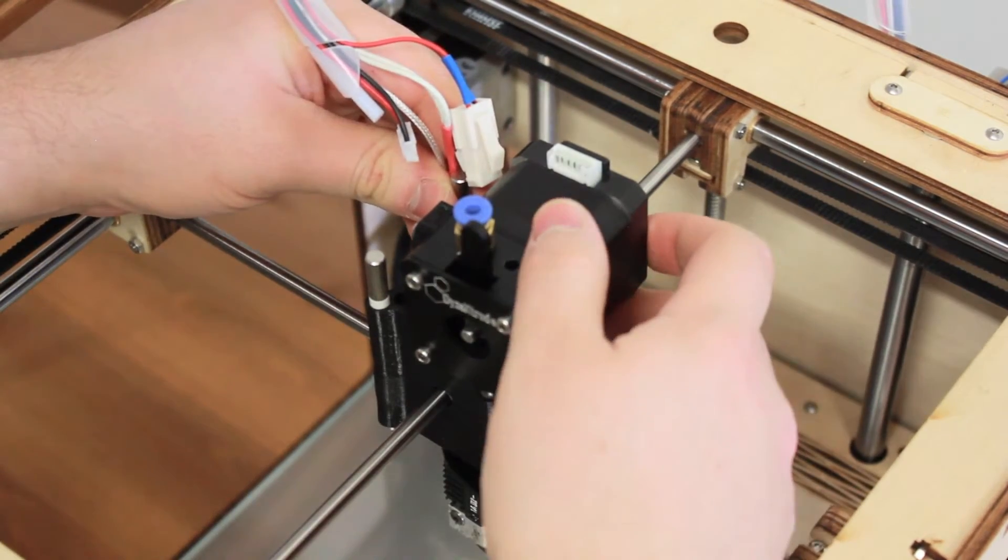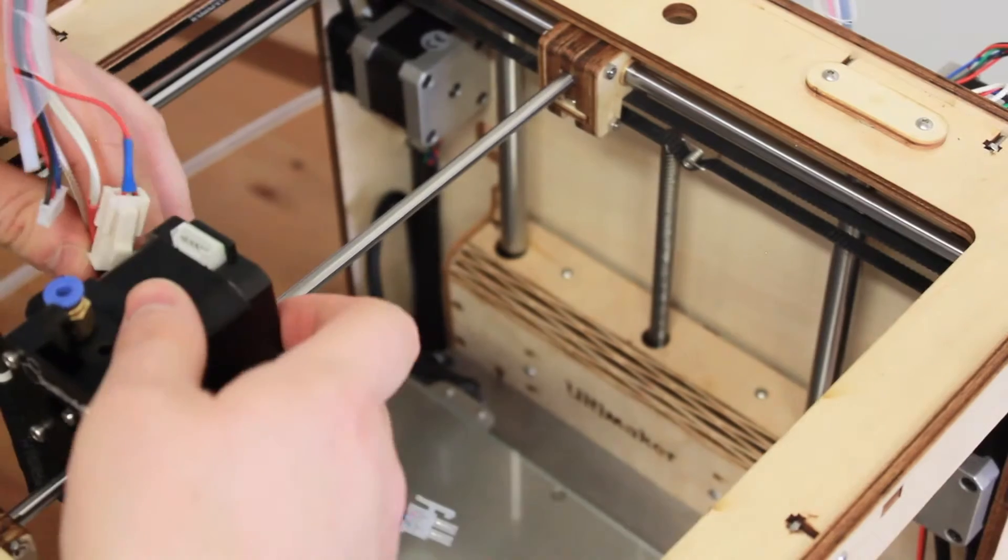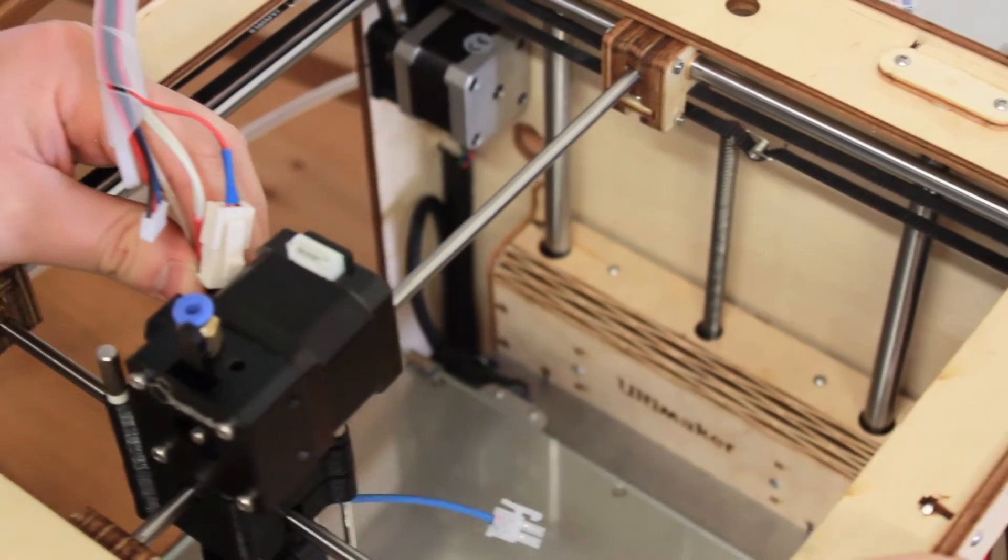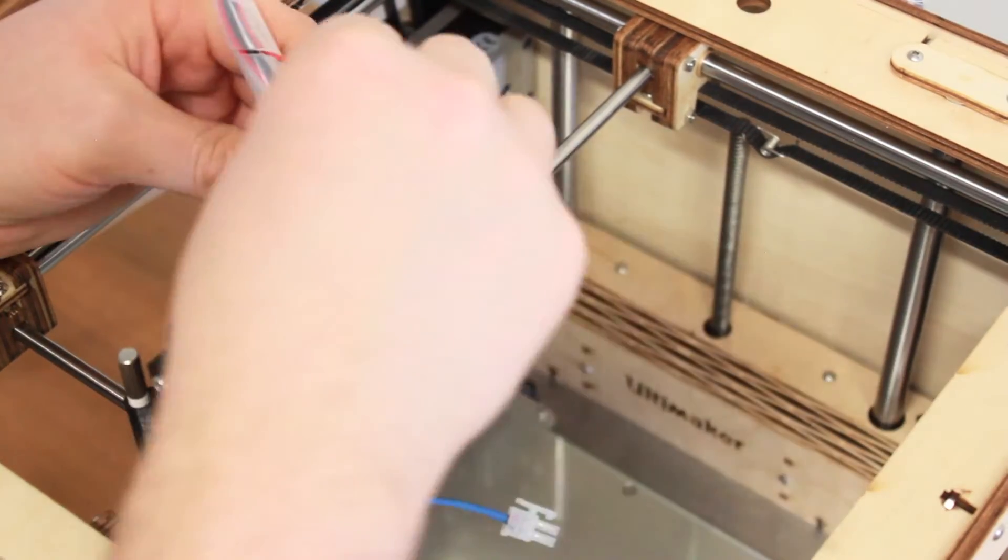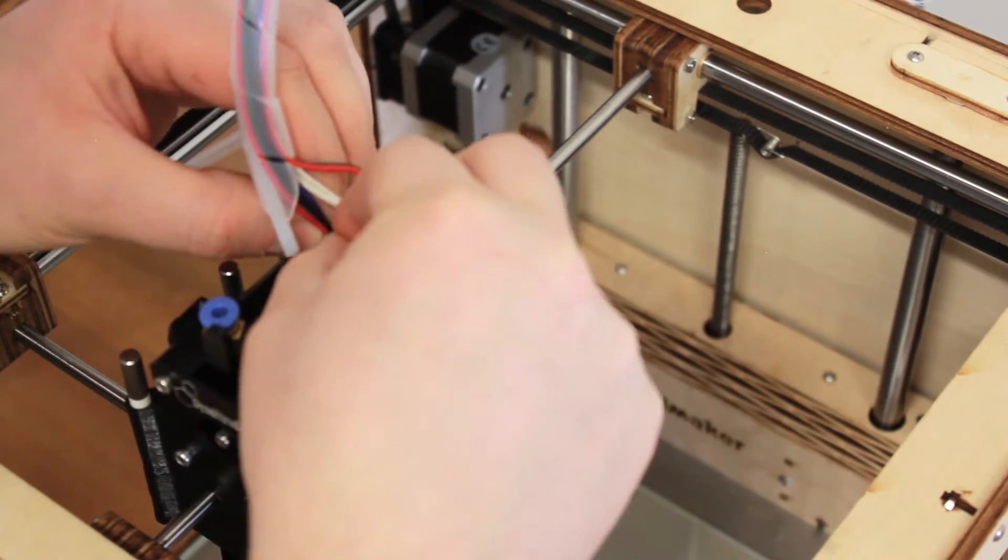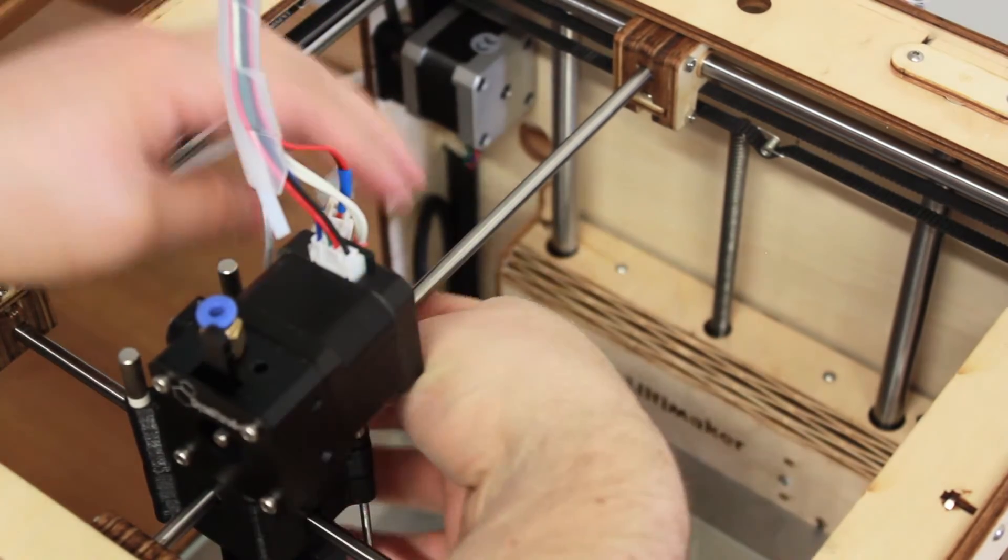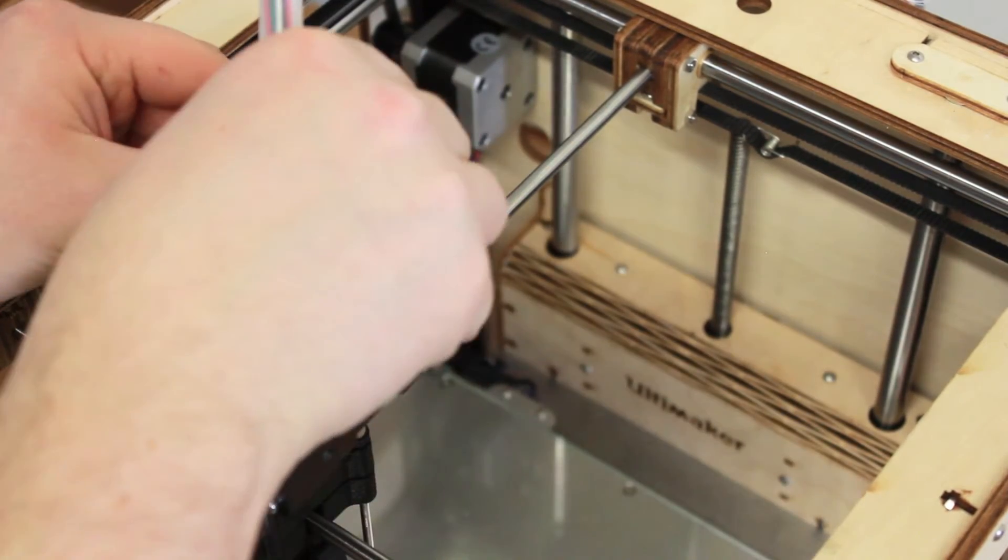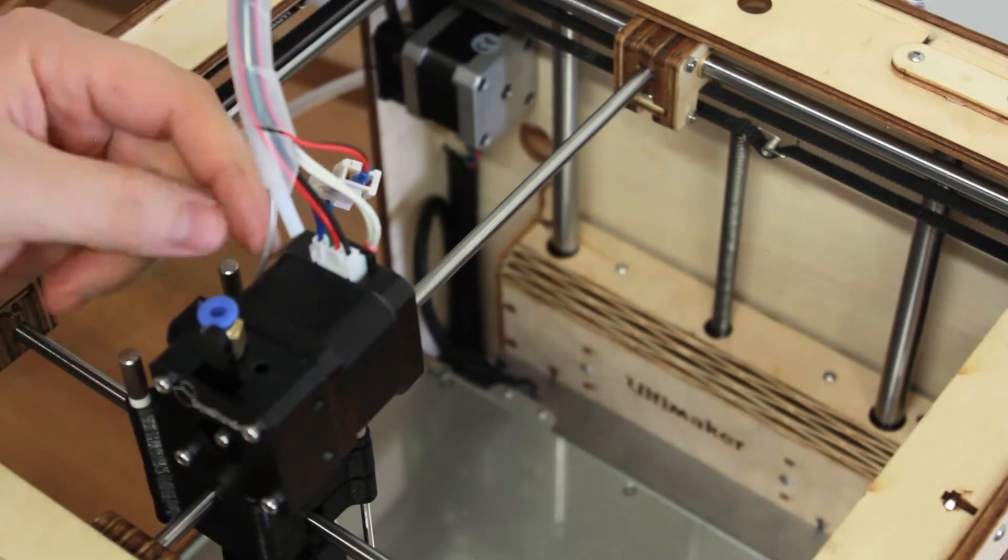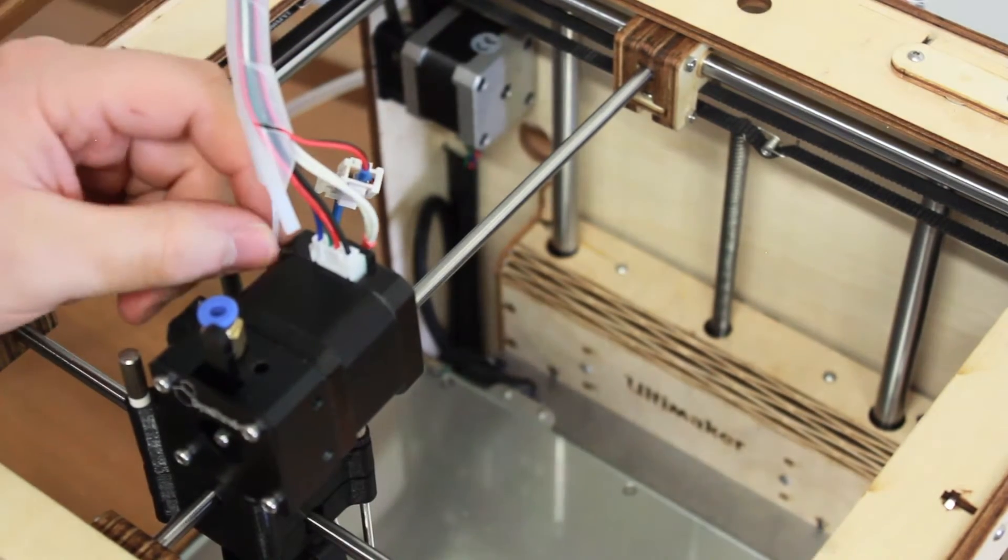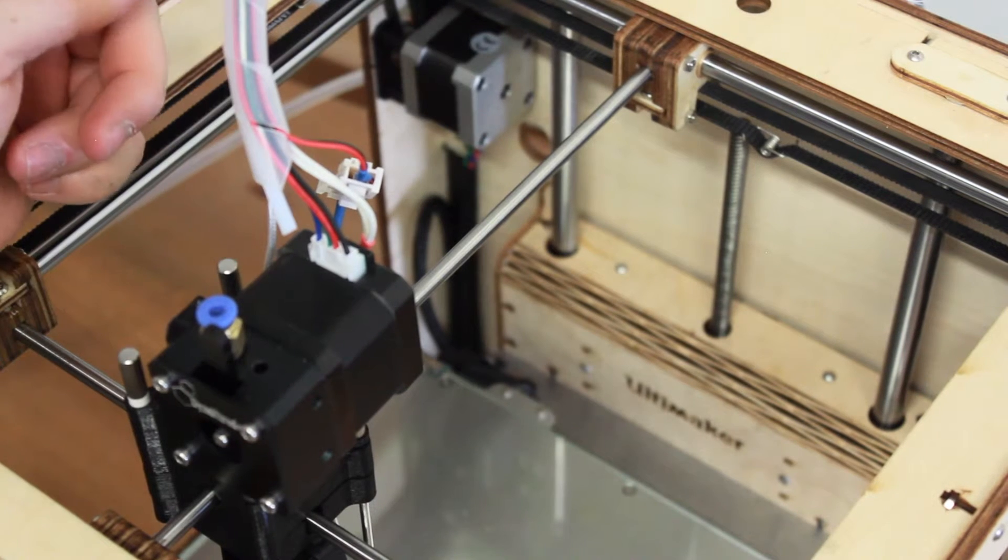So when you make your home position this way and this way, there won't be any issue with the end stop. So now just connect the motor and connect the fan. And since the thermistor is already connected and the heater itself is already connected, you're now ready to go.